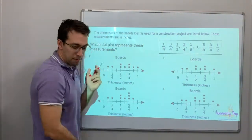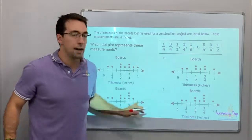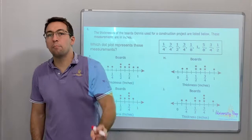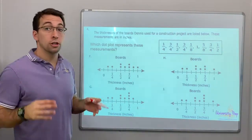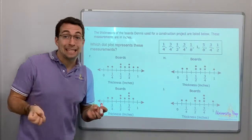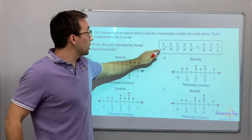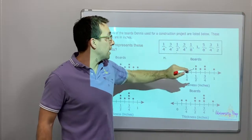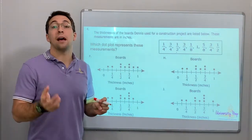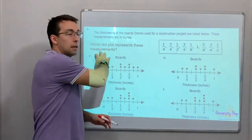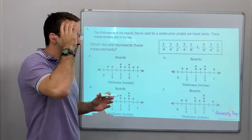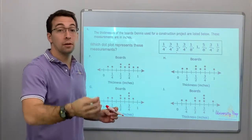Number 4 — data, graphs, tables, charts. Look at all these dot plots, not scatter plots. The thickness of the boards Dennis used for the construction project are listed below — measurements in inches: quarter inch, three quarter, half inch, three quarter, one eighth. Which dot plot represents the measurements? Dot plots take time to check.